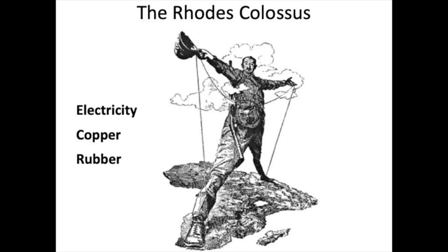The telegraph wire he holds shows the growing importance of electricity, harnessed on a mass scale for the first time. Most likely the wire would have been made from copper mined in Africa or the United States. Rubber from the Belgian Congo, Brazil, or British-controlled Malaysia would have wrapped it for insulation.